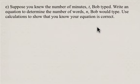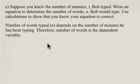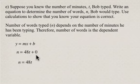Now suppose you knew the number of minutes Bob typed. Write an equation to determine the number of words Bob would type. Use the calculation to show that you know your equation is correct. And this is really important that you understand that sometimes this is asked of you on EQAO and the final exam. So the number of words typed depends on the number of minutes he's been typing. So as we said before, the number of words typed is the dependent variable. So for y equals mx plus b, we're going to put in n for number of words. 48 is our slope. And our independent variable is time. Because remember, number of words typed depend on the time you're typing for. So the independent variable is t. And so this means that the equation, because the y intercept was 0, we can simplify to be n equals 48t.